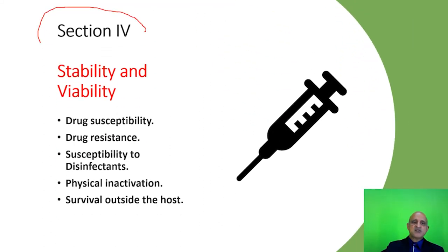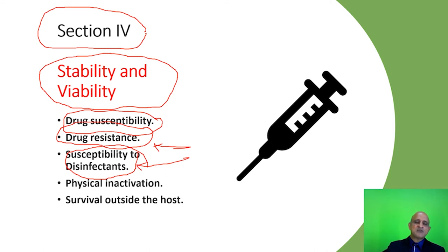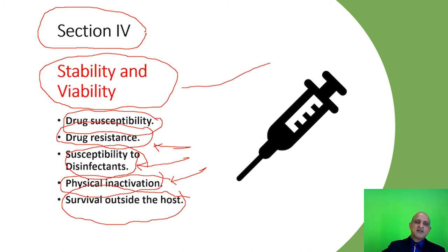Section 4 focuses on the stability and viability of the biological agent. There are multiple cases of drug resistance or antibiotic resistance in microbes reported across the world, and these must be addressed in risk assessment. The susceptibility to disinfectants is another issue to address, as disinfectants are constantly used in the laboratory. The conditions for physical inactivation may include heat, steam, or ultraviolet radiation, as well as the ability of the microorganism to survive outside of the host.